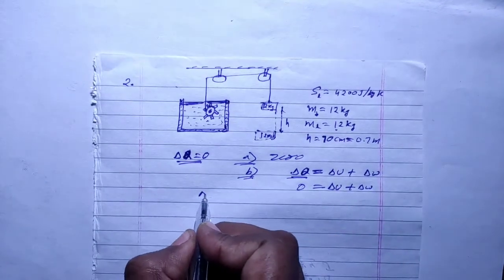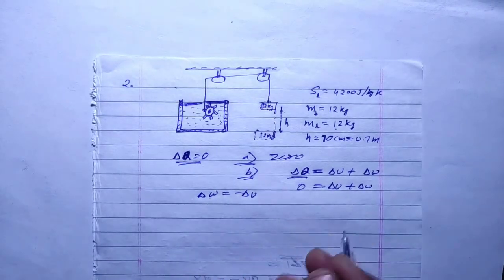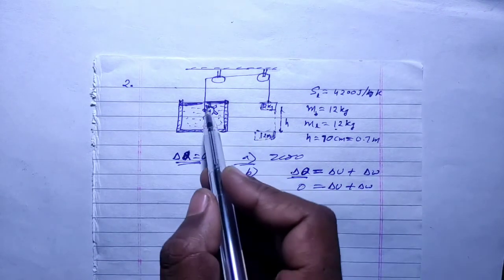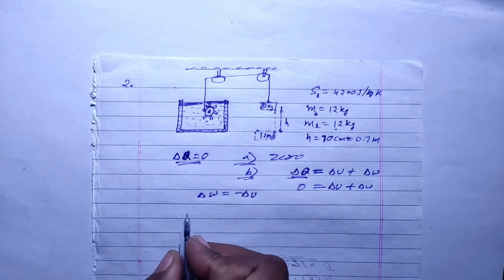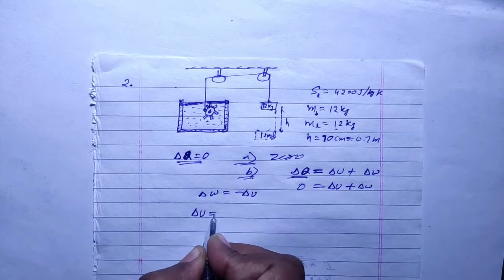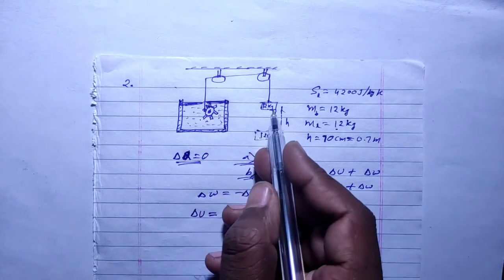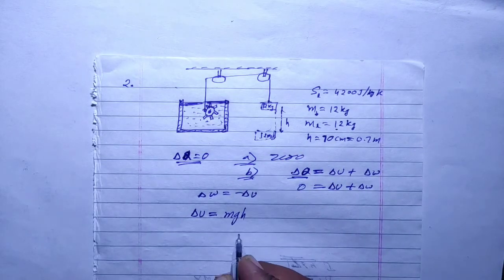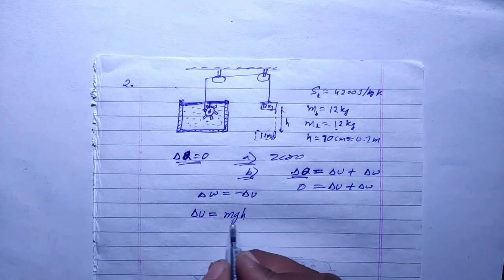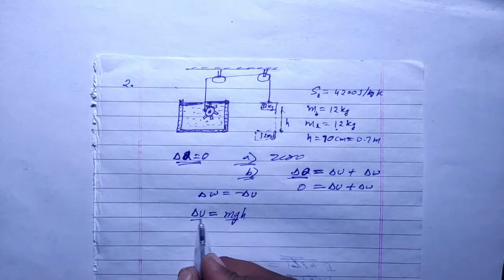Work done is equal to negative of internal energy. Internal energy is being increased by the potential energy which converts to rotation. Rotational energy equals MGH. So MGH equals internal energy. This is your work done. MGH, internal energy will be positive because temperature increases.